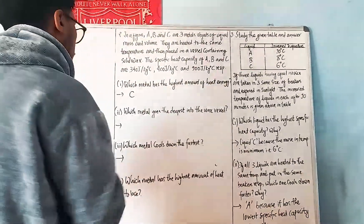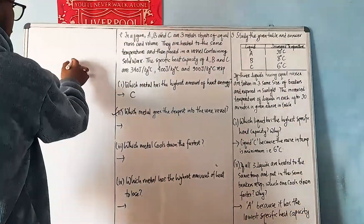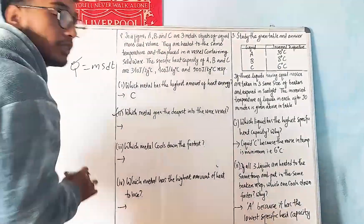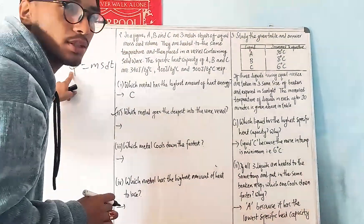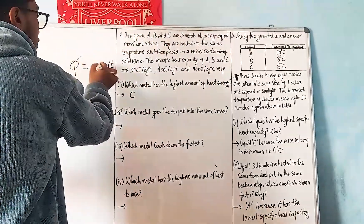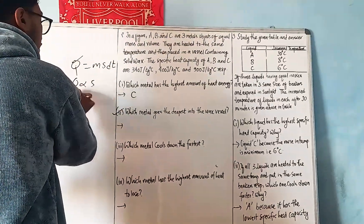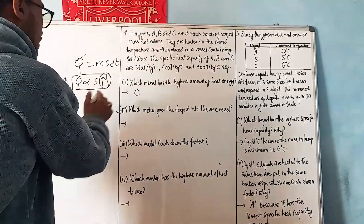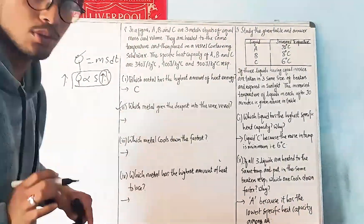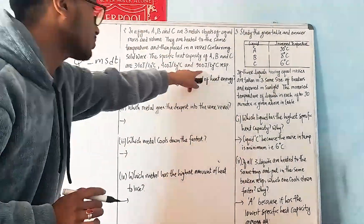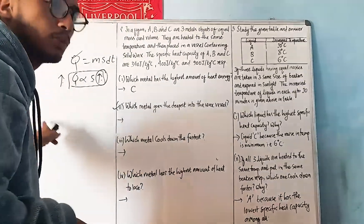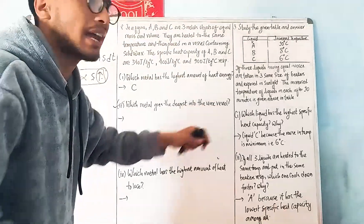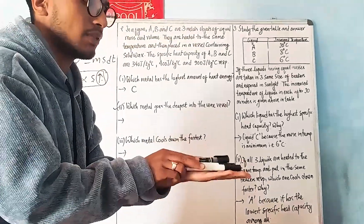Using the formula Q = mSdT, we can see that Q (heat energy) is directly proportional to S (specific heat capacity). So if S is big, Q is big. Which metal goes deepest into the wax? The one with the highest heat energy — meaning the highest specific heat capacity.